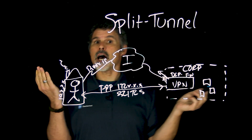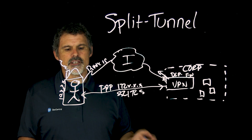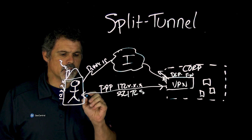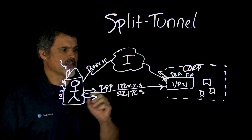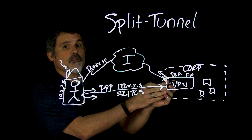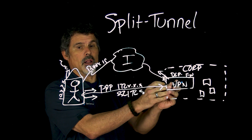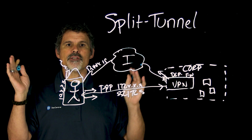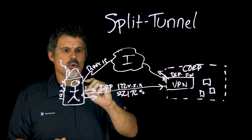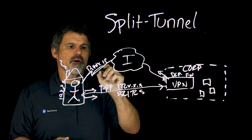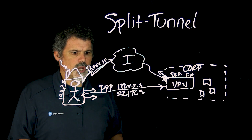What split tunneling is, essentially, is saying that only traffic that is destined for the corporate network will go through the tunnel. Anything else — anything publicly available — will go out through the regular connection.